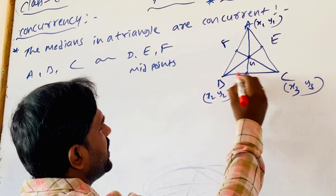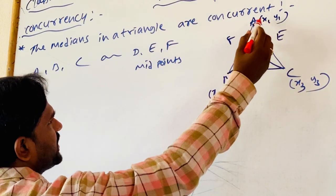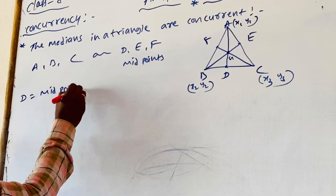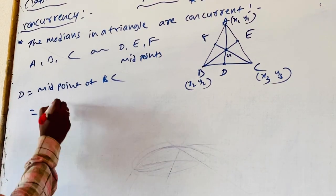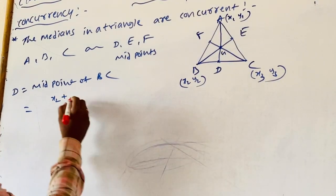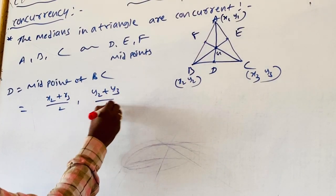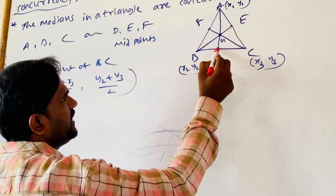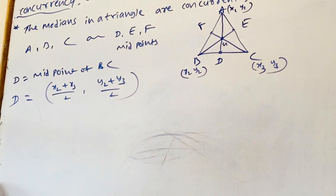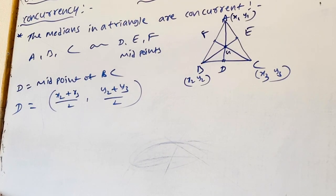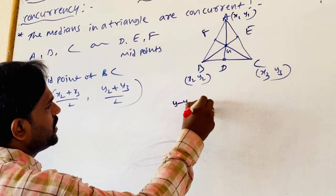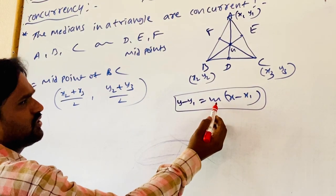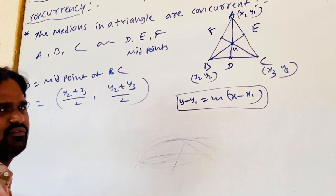We know the vertex A coordinates and we need to find the coordinates of D. D is the midpoint of BC, so using the midpoint formula: D = ((X2 + X3)/2, (Y2 + Y3)/2). We know two points on line AD, so we find the equation using Y − Y1 = M(X − X1), where M is the slope of AD. Using slope formula: M = (Y2 − Y1)/(X2 − X1).